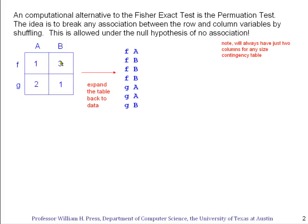So we'll take the table and we'll expand it back into the data that it came from. Notice you can always do this. Here's one event which is an FA, so we put an FA in the first row. Here we have three events which have the combination FB. So we literally expand back to what the original dataset looked like, three FBs right here, and so on. You'll see we have two GAs and one GB.